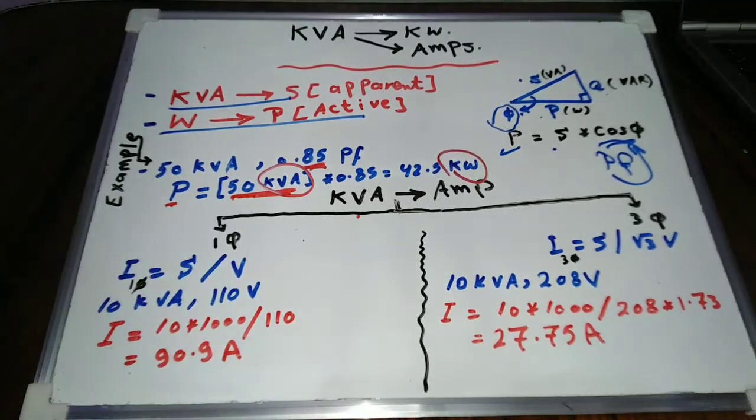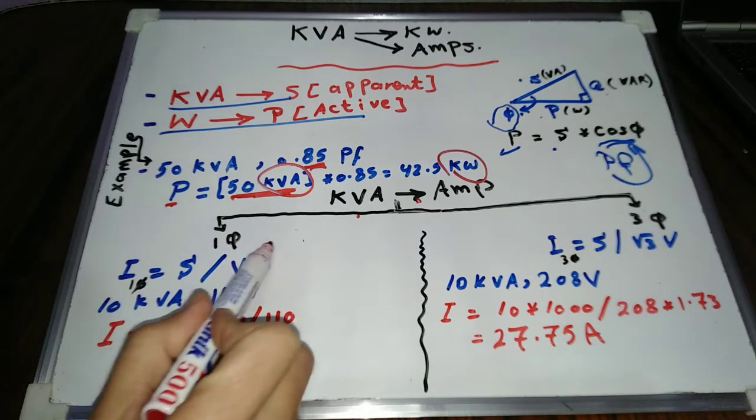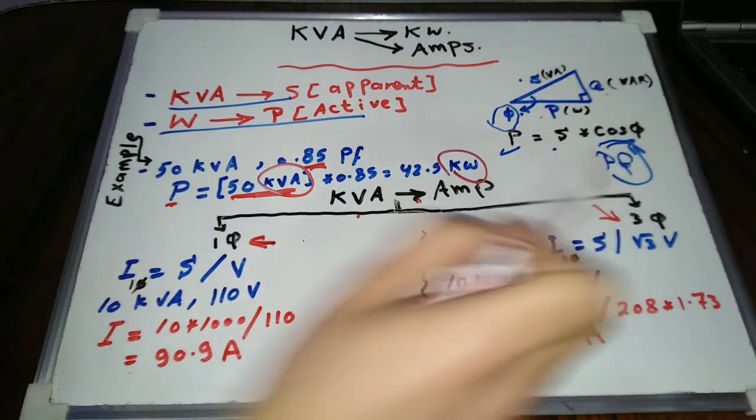Now let's convert kV ampere into amps. In this case we will have two equations, one for single phase and the other for three phase.